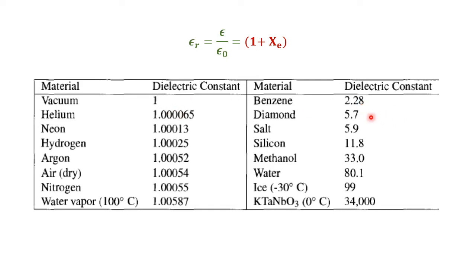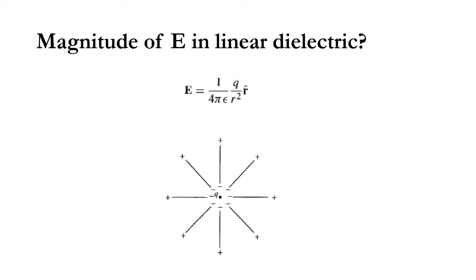For example, consider water which has a dielectric constant of 80.1 — a large value because water has polar molecules. The susceptibility of water will be εᵣ − 1 = 79.1. In your dielectric media, what is the magnitude of the electric field? The magnitude of electric field E in linear dielectrics — meaning the linear equation D = εE is followed.